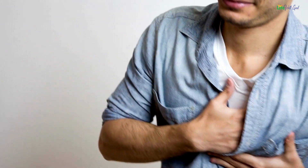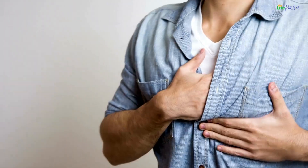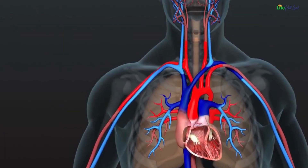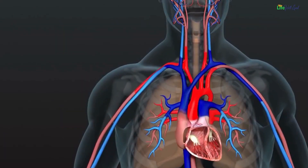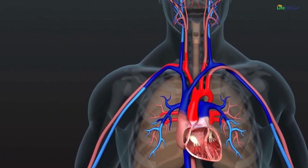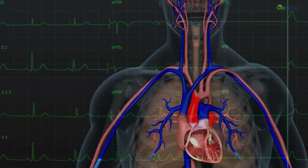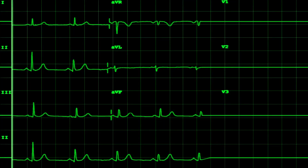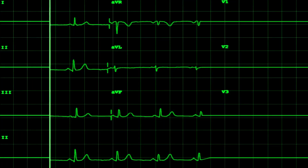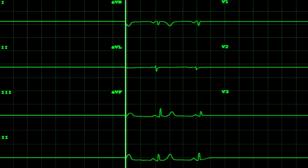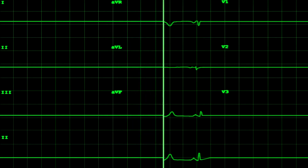The consequences of a heart attack are profound. Within a matter of minutes, heart muscle cells begin to perish, leading to a disruption in the heart's normal rhythm. In more severe cases, a cardiac arrest can occur, causing the heart to cease beating altogether.